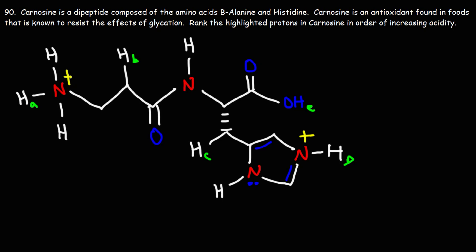Number 90: carnosine is a dipeptide composed of the amino acids beta-alanine and histidine. Carnosine is an antioxidant found in foods that is known to resist the effects of glycation. Rank the highlighted protons in carnosine in order of increasing acidity.